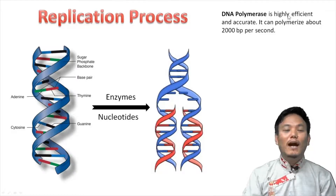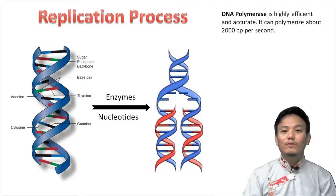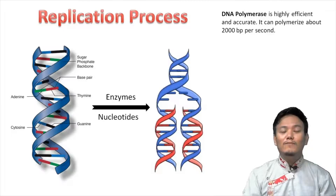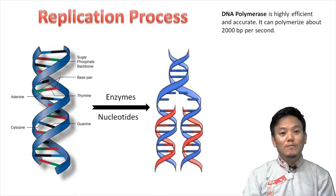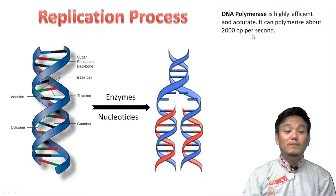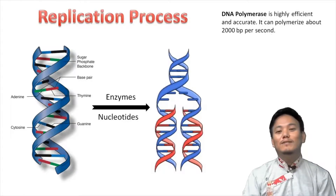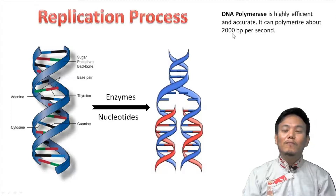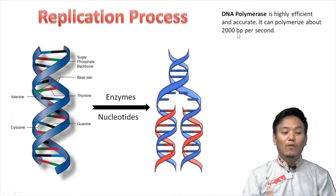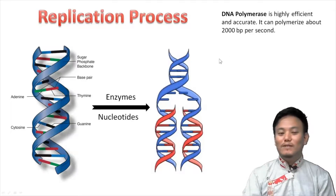DNA-dependent DNA polymerase is highly efficient and highly accurate. It has to be accurate to avoid creating unnecessary or harmful mutations — errors in the DNA copying mechanism can cause mutations that may prove harmful to the organism. It is highly efficient because it can polymerize about 2000 base pairs per second. This number is derived from how E. coli divides every 20 minutes; by counting the number of base pairs and the division speed, they calculated that DNA polymerase can polymerize up to 2000 base pairs per second.